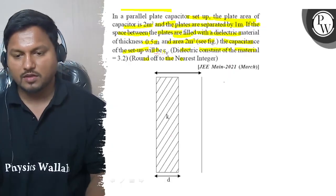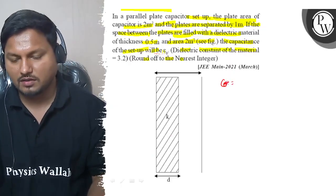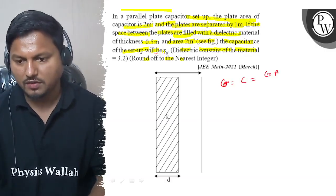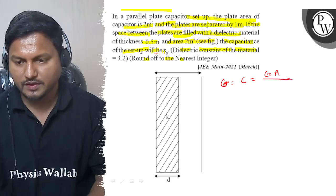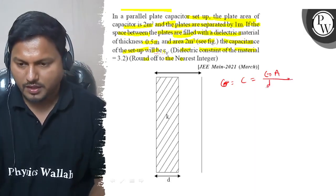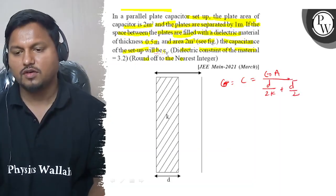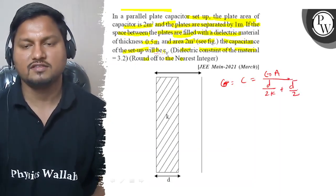So we know the formula for capacitance with the dielectric constant: C is equal to epsilon 0 into area of the plate upon d by 2k plus d by 2. This is the formula for the capacitance with the slab.